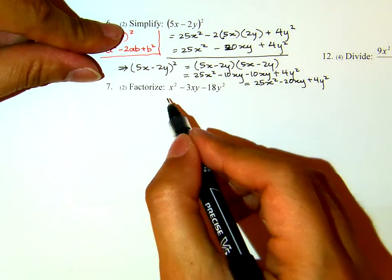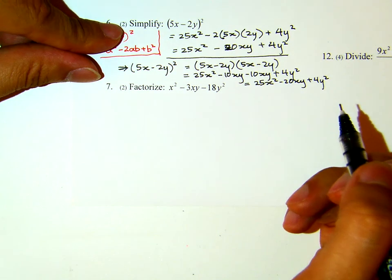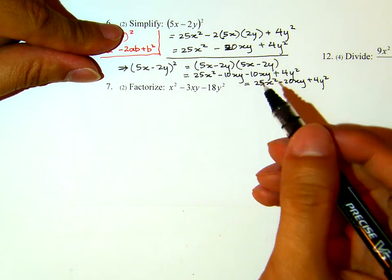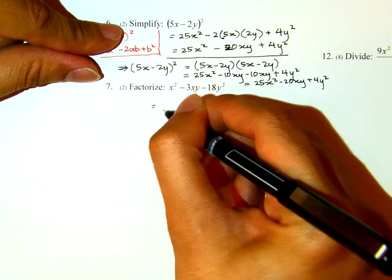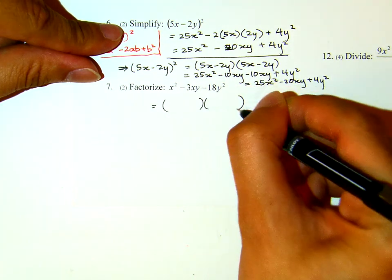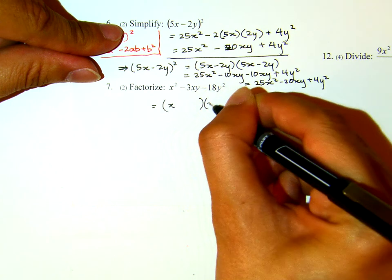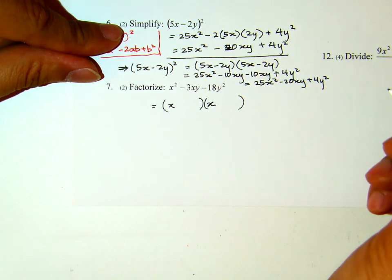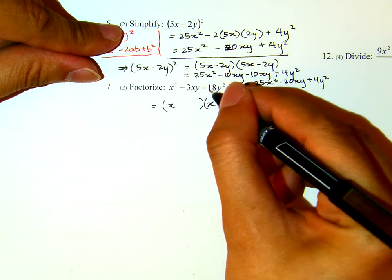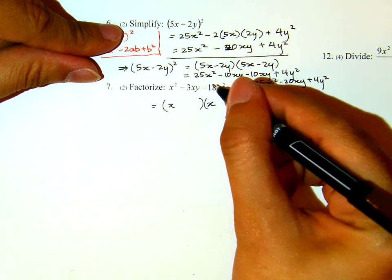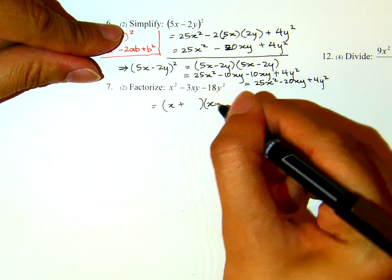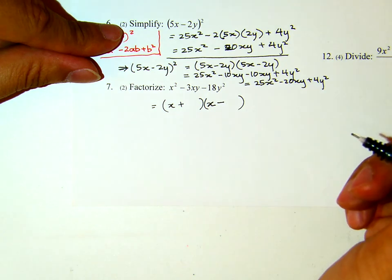Number 7, factorize x squared minus 3xy minus 18y squared. Now for the x squared, if it is factorable, it will be x and x here, and then because the second sign here is negative, we know it will be plus minus.